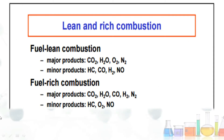For lean combustion, the major products are CO₂, H₂O, O₂, and N₂, while minor products include HC, CO, H₂, and NO. For rich combustion, the major products are CO₂, H₂O, CO, H₂, and N₂.